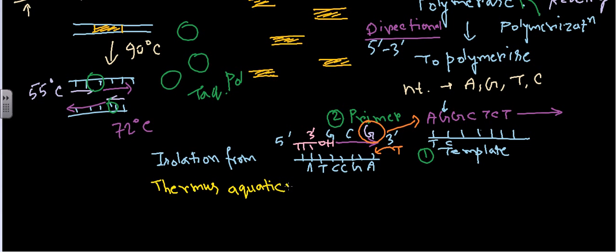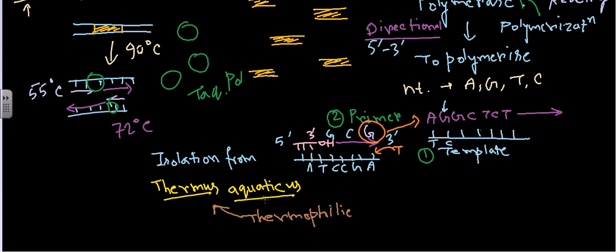Thermus aquaticus is a type of thermophilic bacteria — bacteria that love to live at higher temperatures. These bacteria possess this kind of enzyme because they need to carry out all necessary cellular processes, including DNA replication, at high temperatures. We take 'T' from Thermus and 'aq' from aquaticus, giving us 'Taq' polymerase.